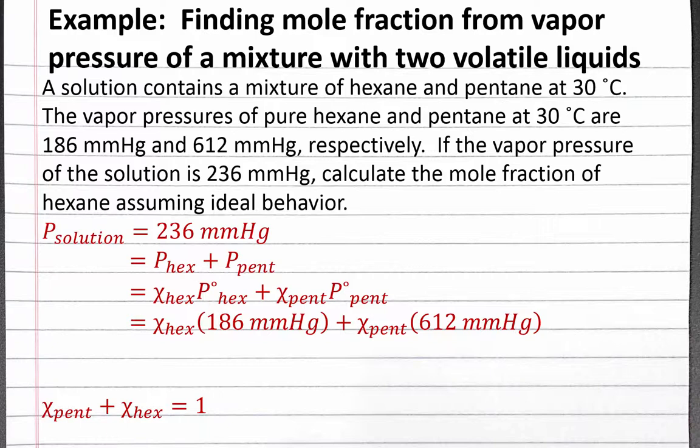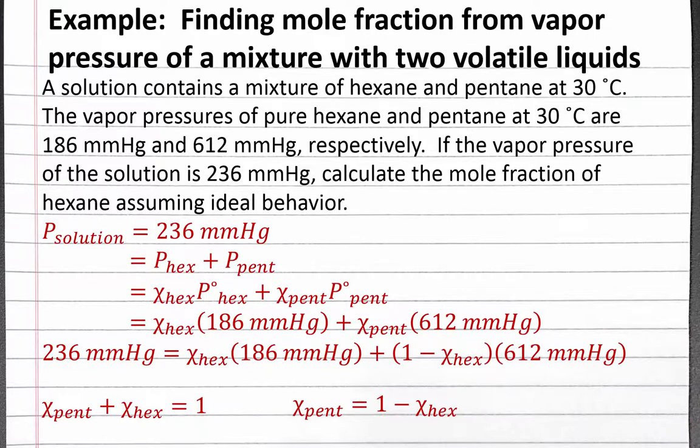We want to know the mole fraction of hexane, so we can rearrange this equation to put the mole fraction of pentane in terms of the mole fraction of hexane. The mole fraction of pentane equals 1 minus the mole fraction of hexane. Substituting this expression into our equation, we'll have one equation with one unknown, which we can solve with algebra.